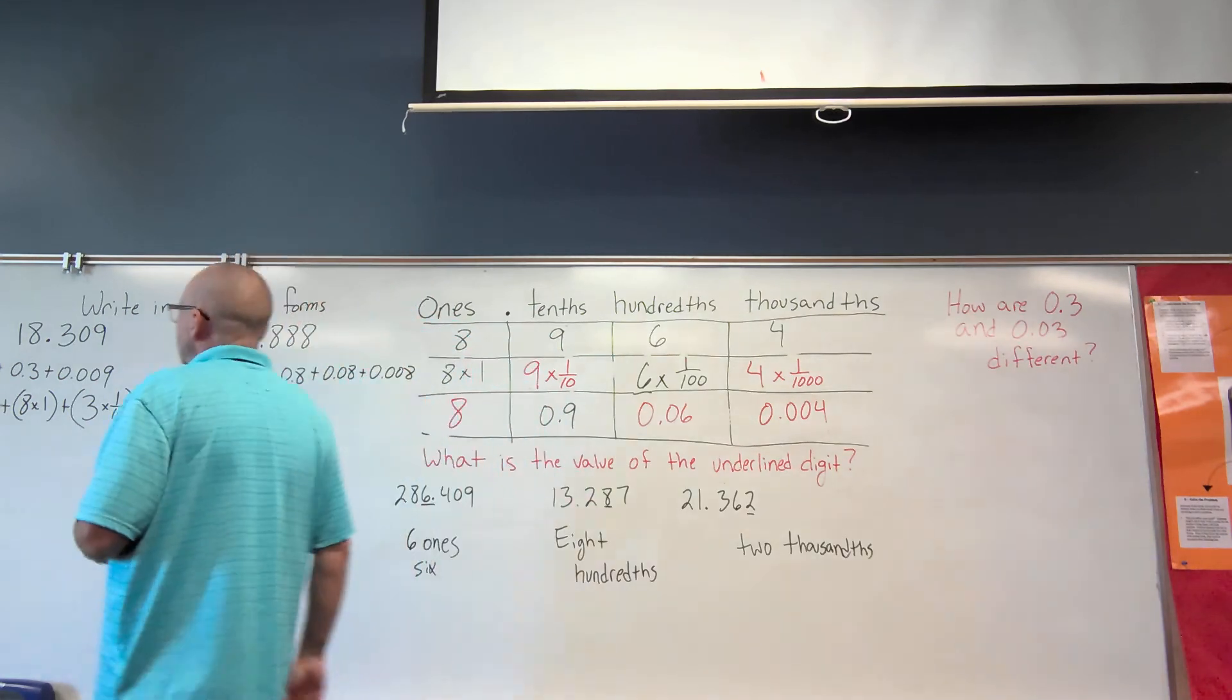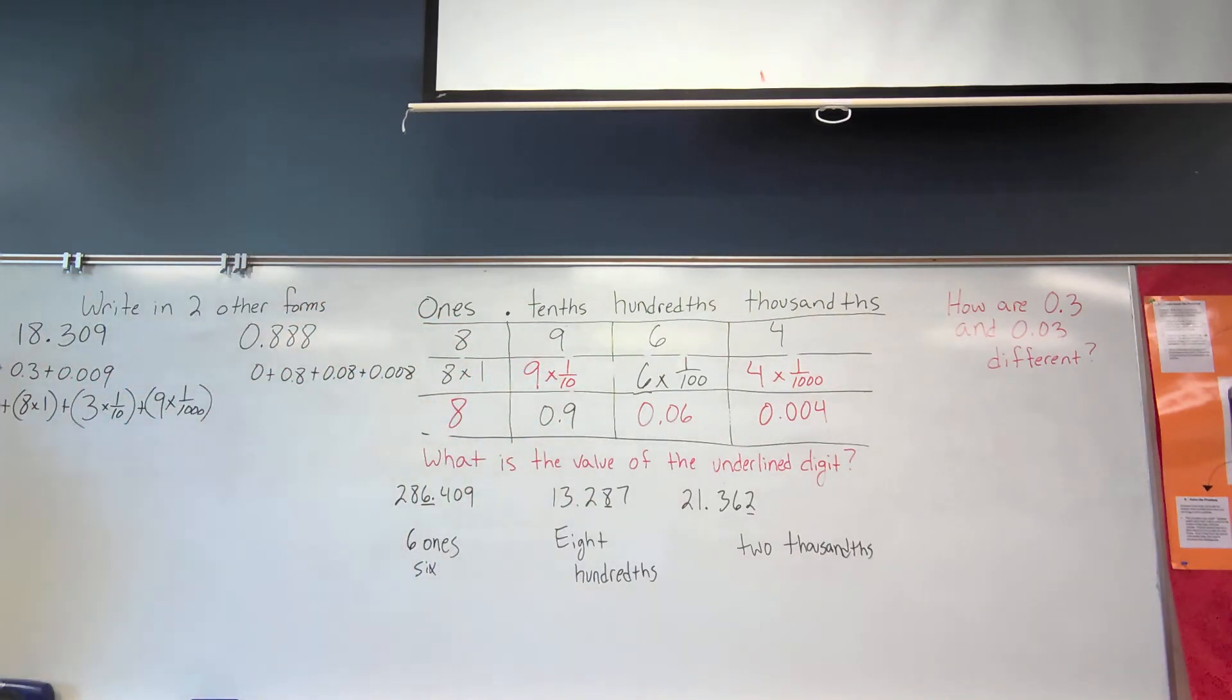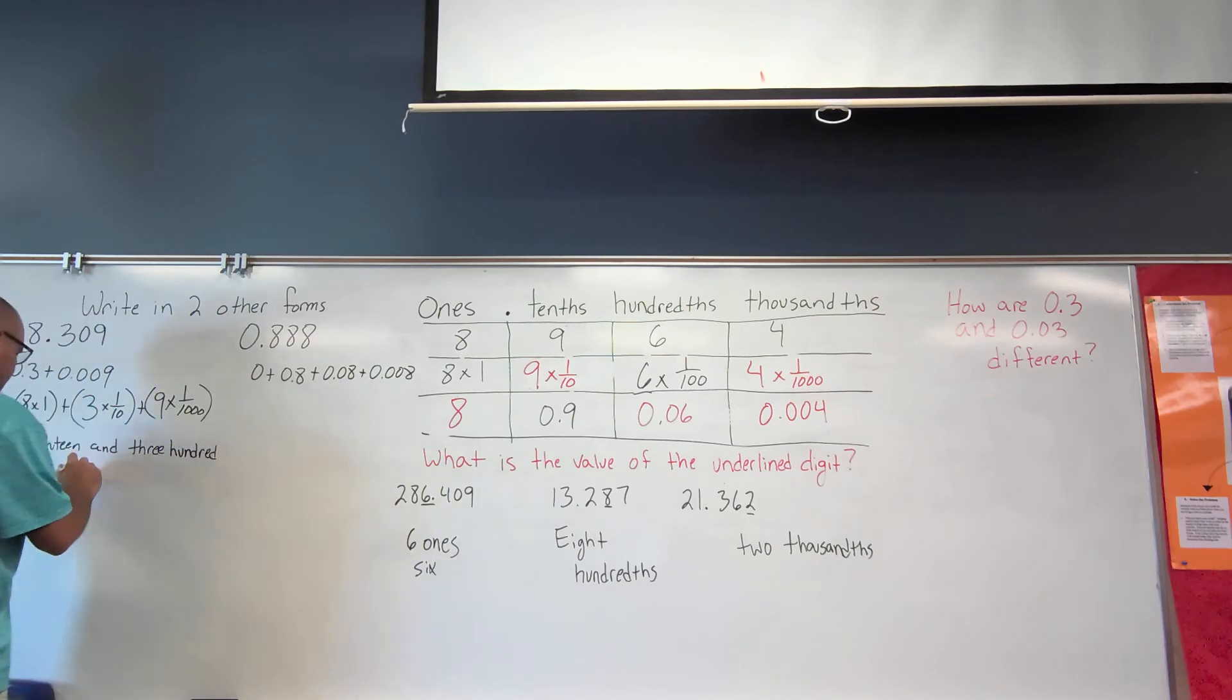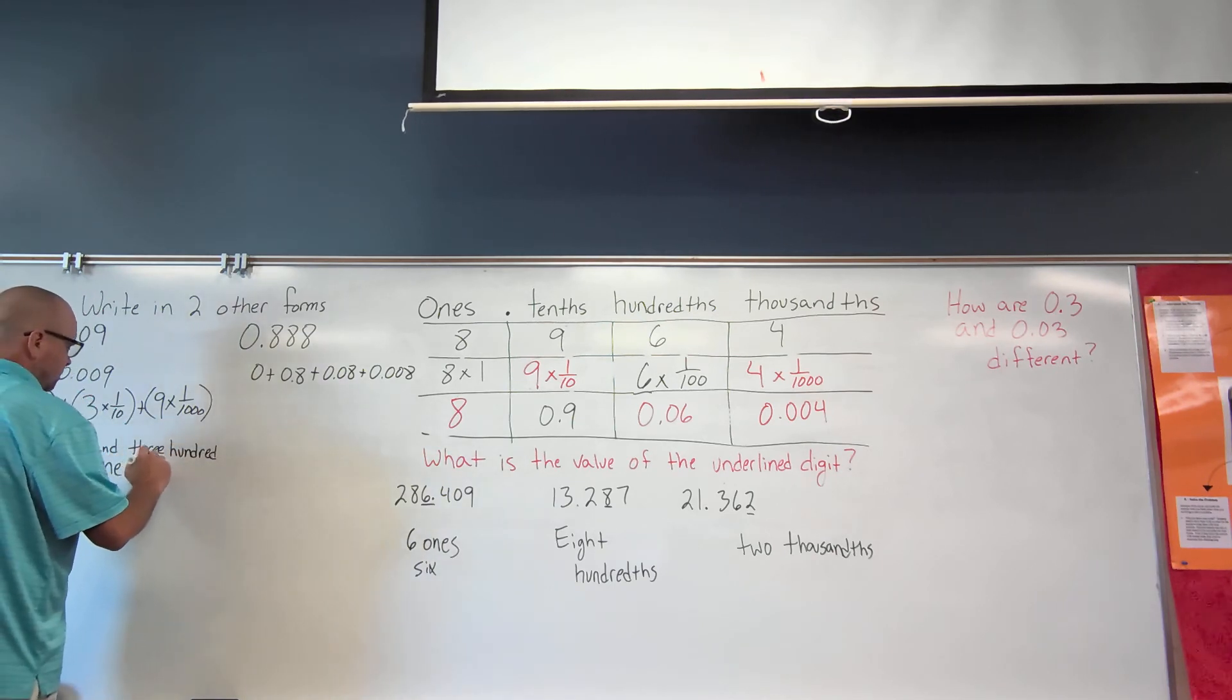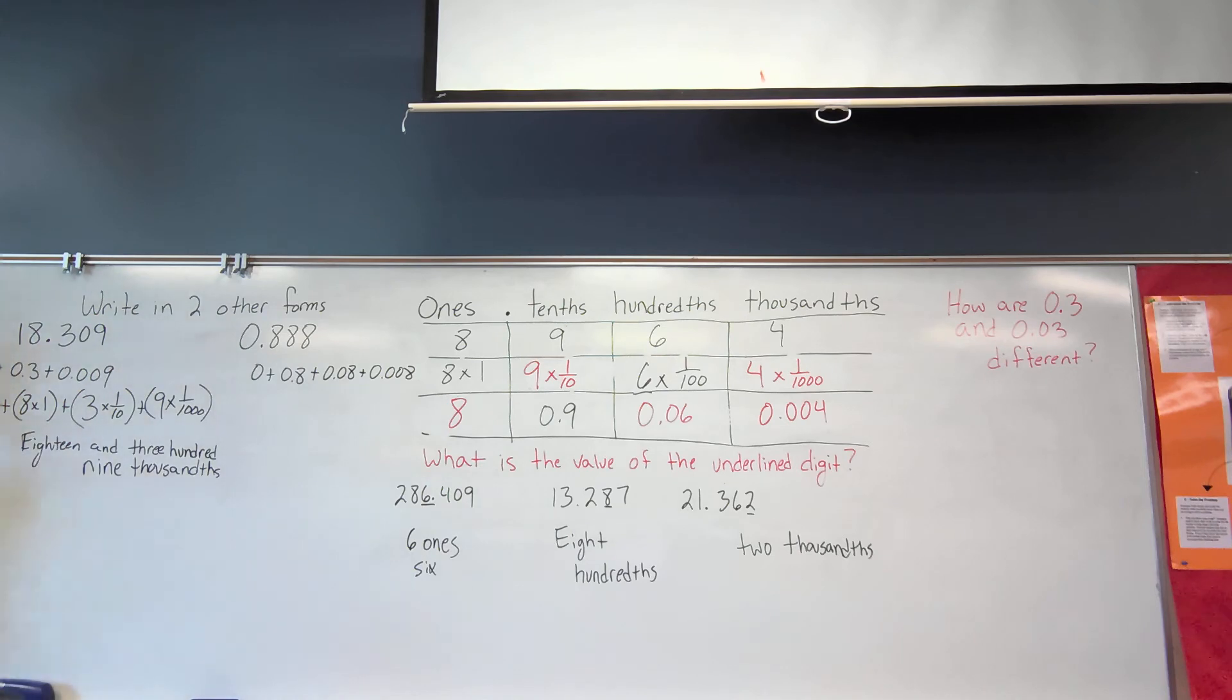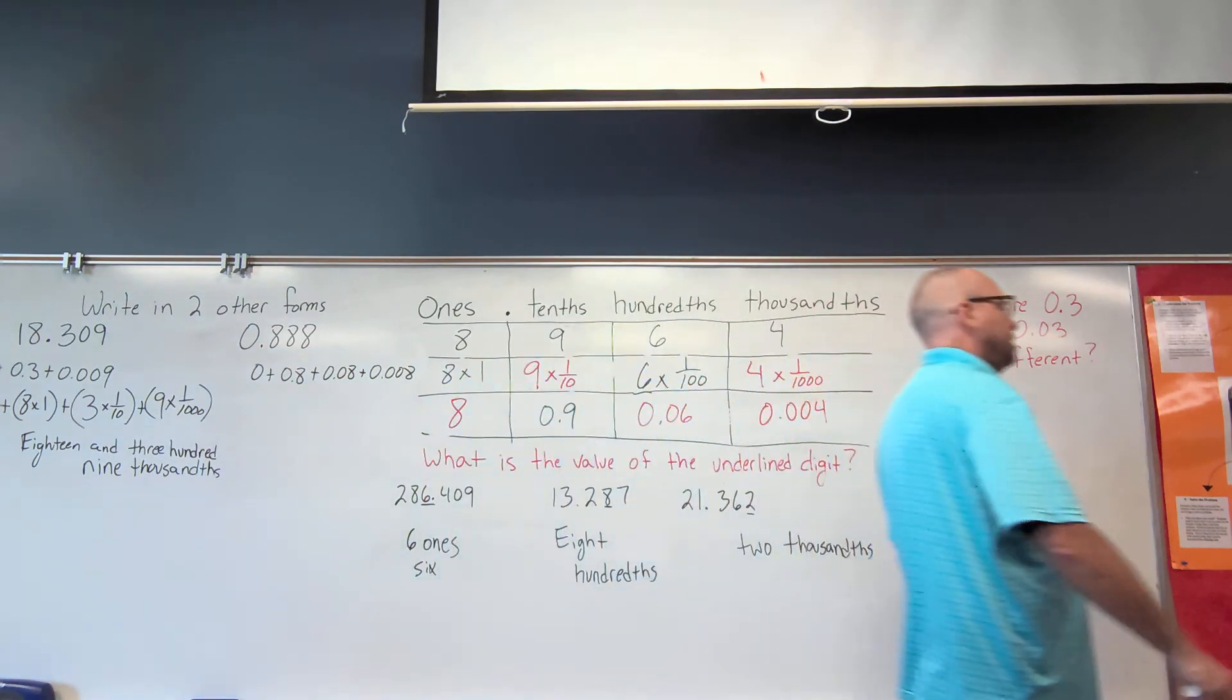Eli A, we got word form for either one of these. Which one would you like to use, Eli A? The first one. All right, this first one over here. All right, word form. Tell me where to start. 18 and 309 thousandths. Perfect. 18 and 309 thousandths. Making sure you put your THS at the end.